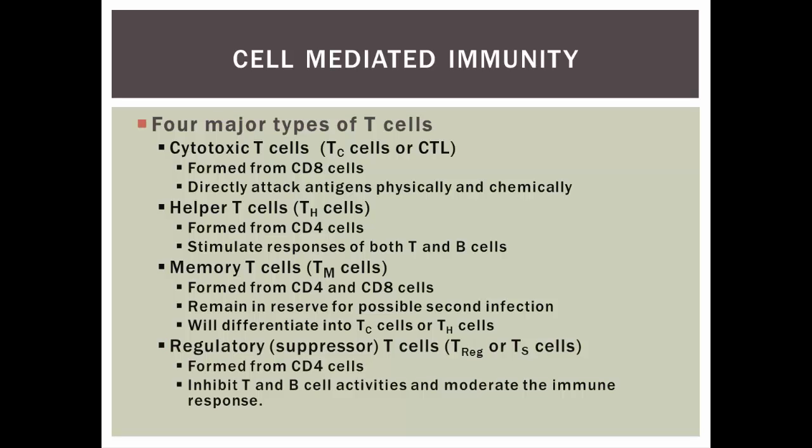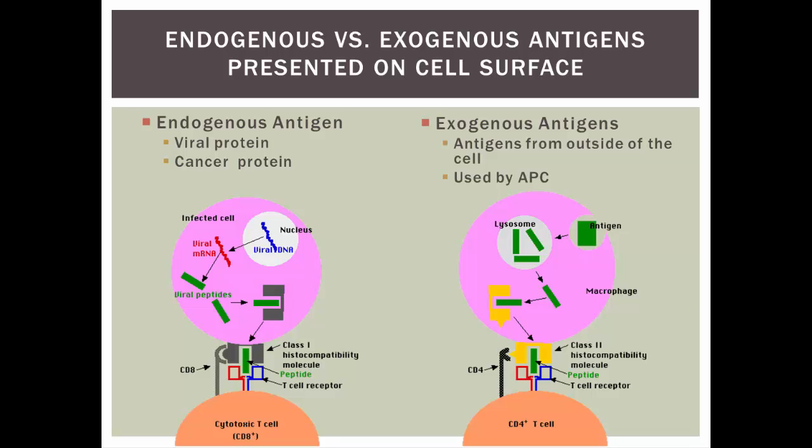Then there are regulatory or suppressor T-cells. These come from CD4 cells as well. They inhibit T-cells and B-cells so they can moderate the immune response and keep it in check — think of these as the military police for our army. Now let's look at why we care about CD8 versus CD4 and how that ties in with the type of antigen they're going to fight.